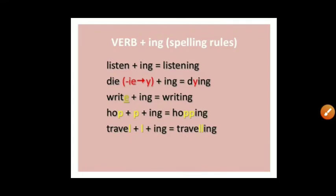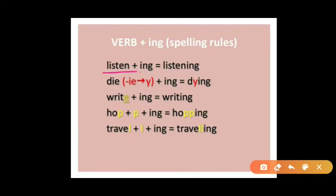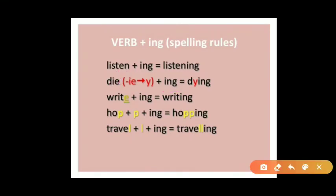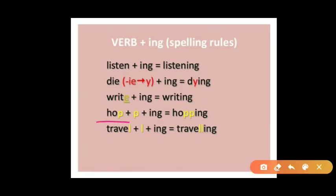Let's see some verb spelling rules when adding '-ing'. Simply add '-ing' to most verbs: 'listen' becomes 'listening.' For verbs ending in 'ie', remove 'ie' and add 'ying': 'die' becomes 'dying.' For verbs ending in 'e', remove the 'e' and add '-ing': 'write' becomes 'writing.' For short verbs ending in a consonant, double the consonant: 'hop' becomes 'hopping', 'travel' becomes 'travelling.'